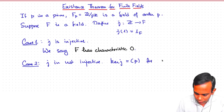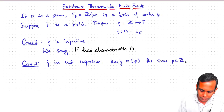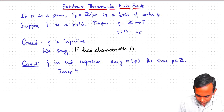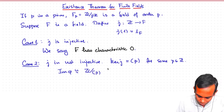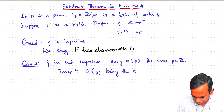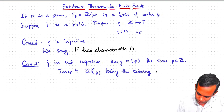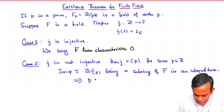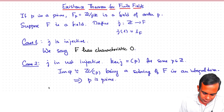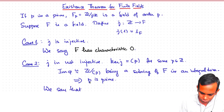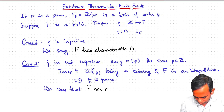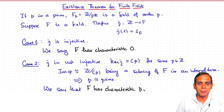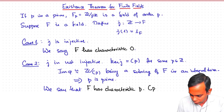The kernel of j is generated by some element p. The image of j is therefore isomorphic to Z mod pZ, and this being a subring of a field is an integral domain. Since a subring of an integral domain is an integral domain, being a subring of F implies that p is prime. In this case, we say that F has characteristic p, and we say the characteristic of F is positive.